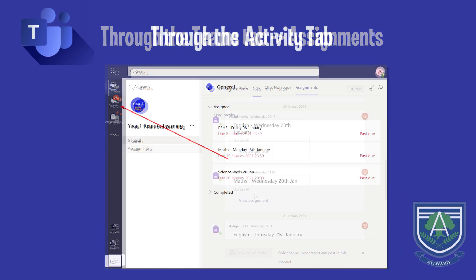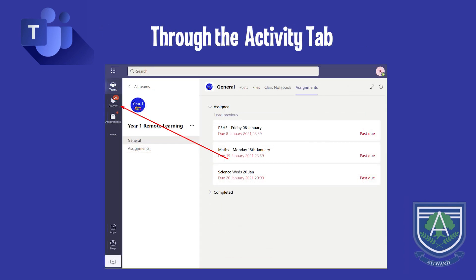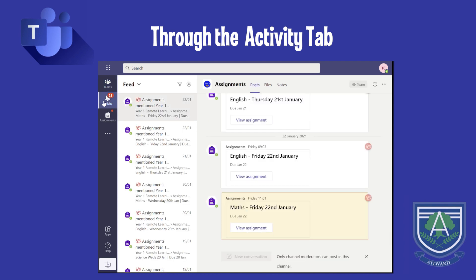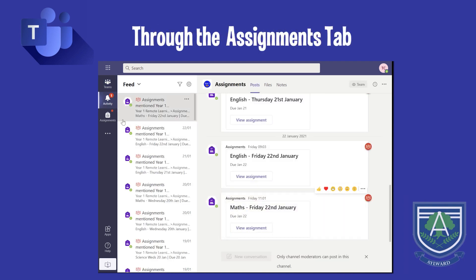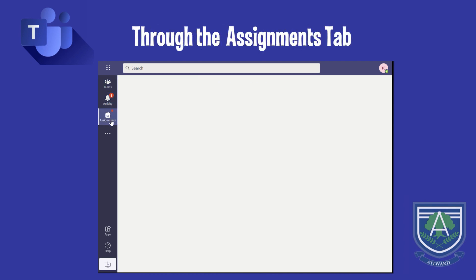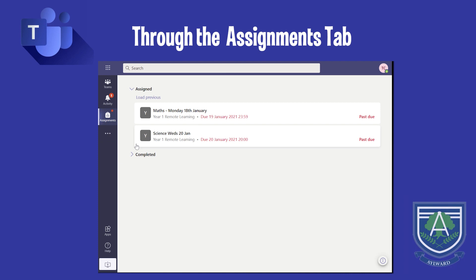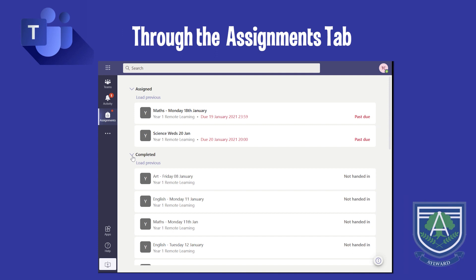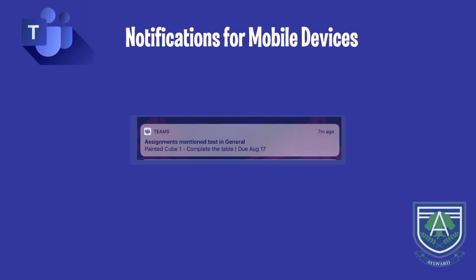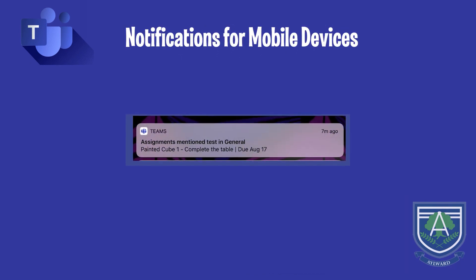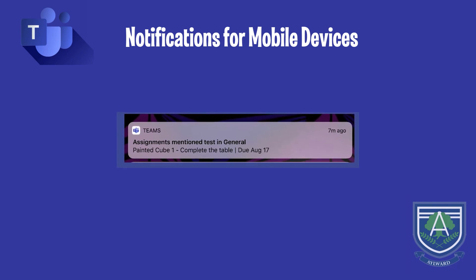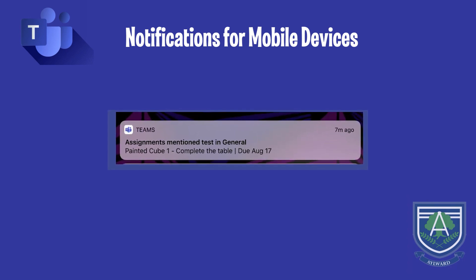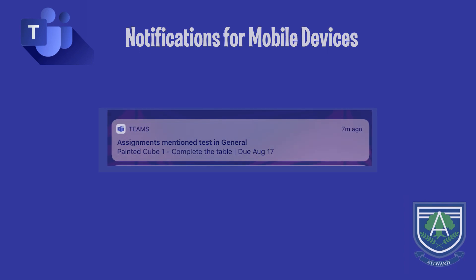The second way is opening the Activity tab. The third way is by opening the Assignments tab. From there you will see all your outstanding assignments and be able to view any completed assignments too. If you are on a mobile tablet device, you will have a notification sent to your device whenever a piece of work has been set.